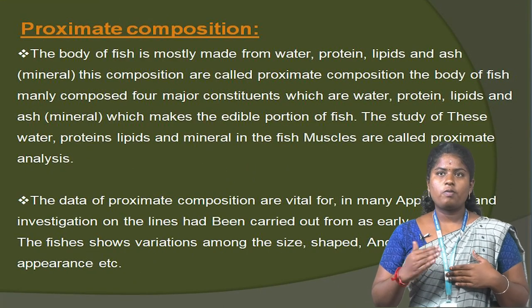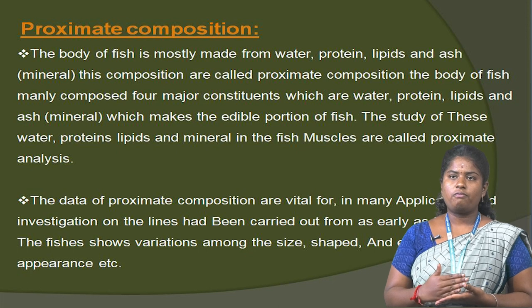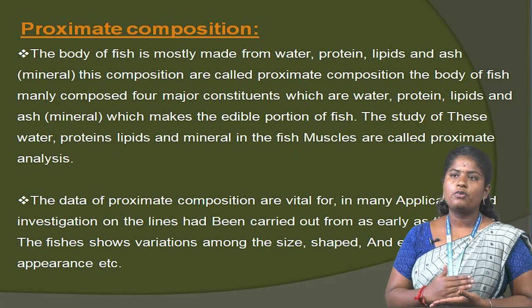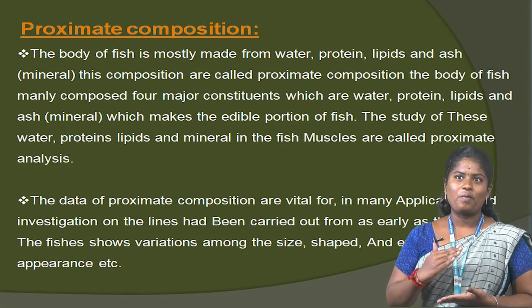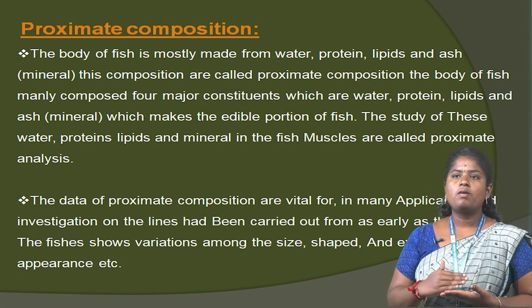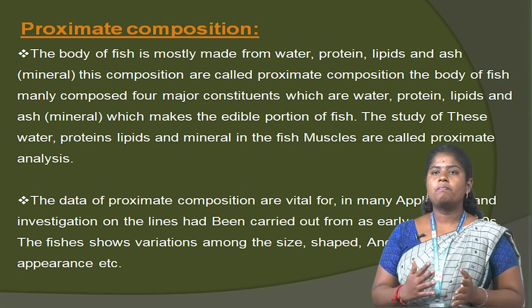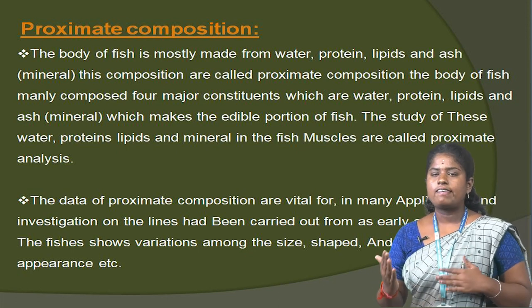Next, the proximate composition of fish. The body of fish is mostly made of water, protein, lipid and ash. This composition is called the proximate composition of the body of fish, mainly composed of four major constituents: water, protein, lipid and ash, which make up the edible portion of the fish. The study of water, protein, lipid and minerals in fish muscles is called proximate analysis.